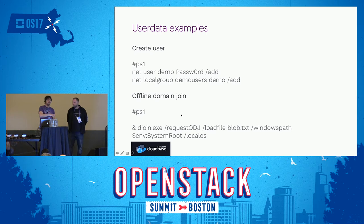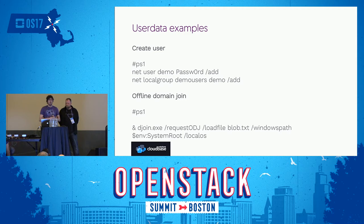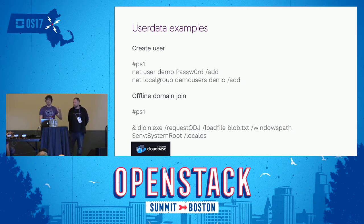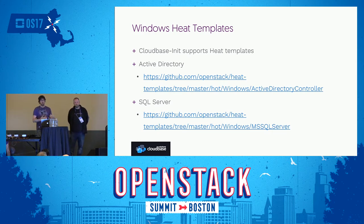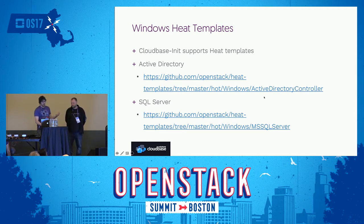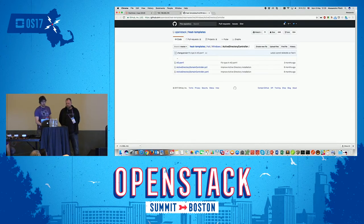Here are two very simple examples: creating users, assigning local groups, domain joins. If it gets more complex, you can run everything inside a user data script — you only have the limitation of the user data size in metadata, though we accept gzipped metadata. If you're serious about orchestration, I'd strongly recommend using something like Heat templates or Juju. There are good examples upstream about how to create an Active Directory controller.